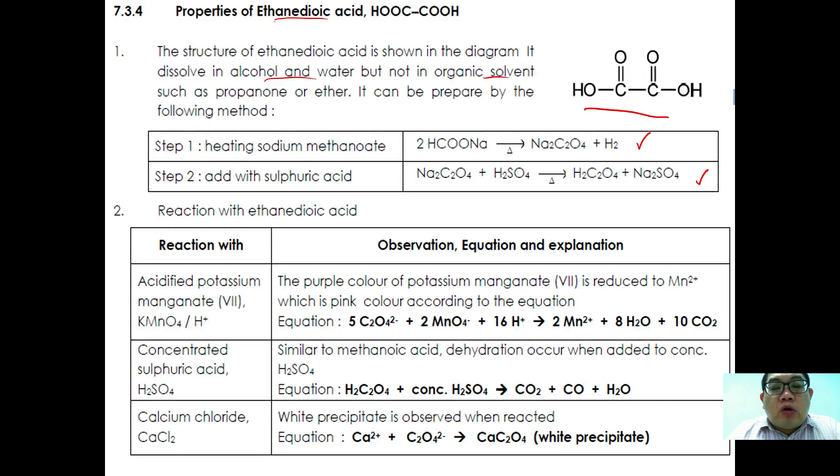Similar to methanoic acid, ethanedioic acid can also react with acidified potassium manganate. The purple color will decolorize and form a pink yellowish color according to this ion equation. Similar to methanoic acid, dehydration can also take place for ethanedioic acid when you react it with concentrated sulfuric acid to form carbon dioxide, carbon monoxide, and water. Finally it can react with calcium chloride to form calcium ethanedioate.